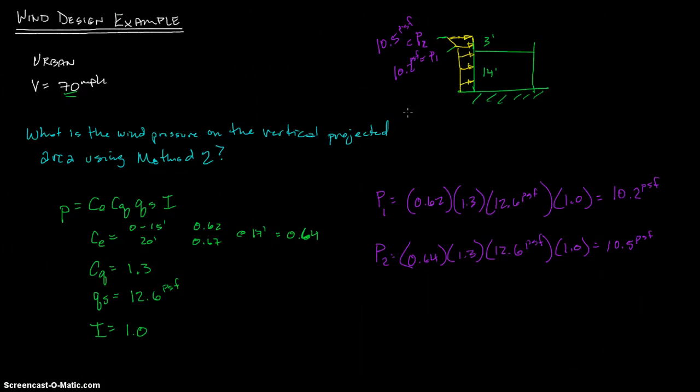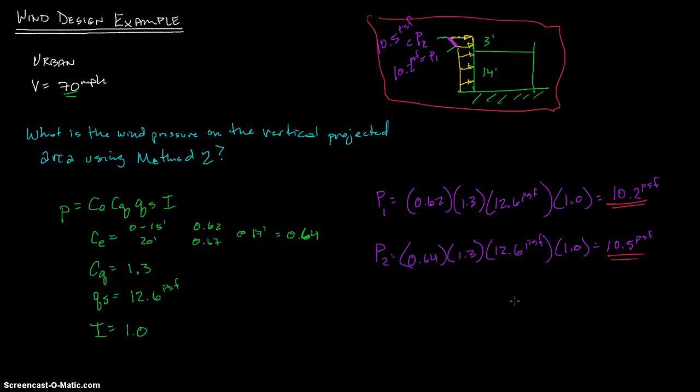So those are our answers for this first question. What is the wind pressure on the vertical projected area? This is the wind pressure. At that point it's 10.5 PSF. At this point it's 10.2, and then all around here is 10.2, and right there it's increasing at a linear rate. Once again, these are our answers, and then the diagram never hurts. I will go ahead and go over the next question that they ask on the next video. I'll see you then.